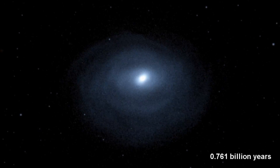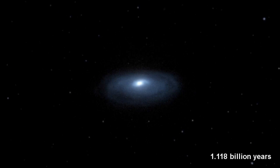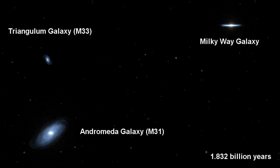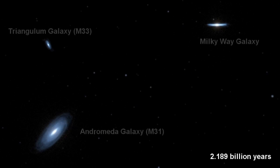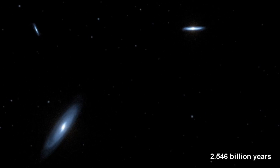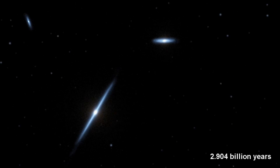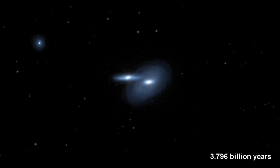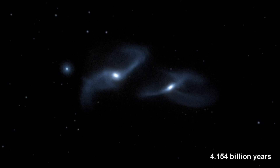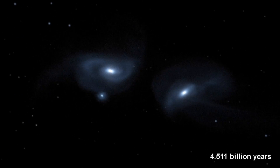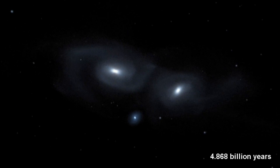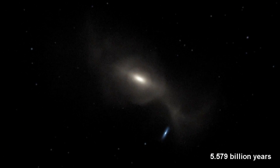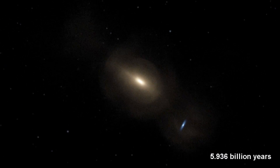Four billion years from now, our own Milky Way galaxy is destined for a collision with the neighboring spiral Andromeda galaxy. The Sun will likely be flung into a new region of our galaxy, but our Earth and solar system are in no danger of being destroyed. Andromeda, also known as M31, is now 2.5 million light-years away, but it is inexorably falling toward the Milky Way under the mutual pull of gravity between the two galaxies, and the invisible dark matter that surrounds them both.